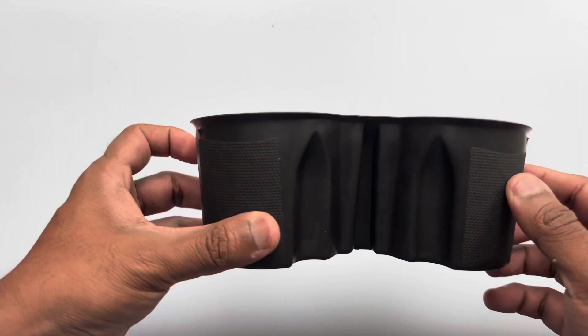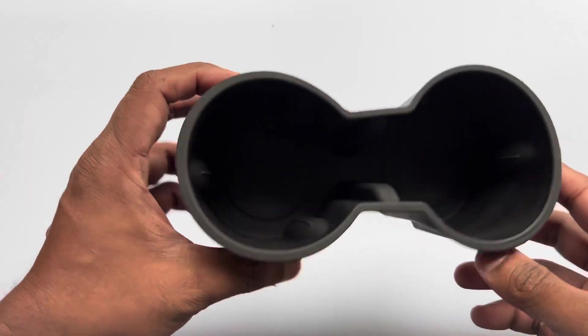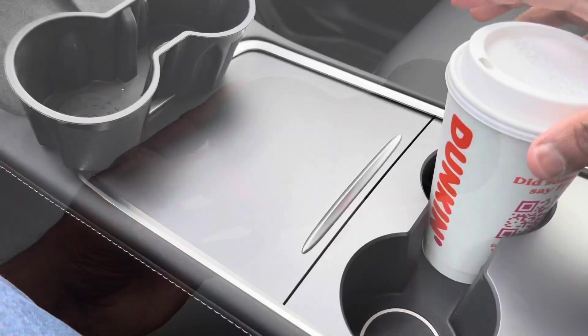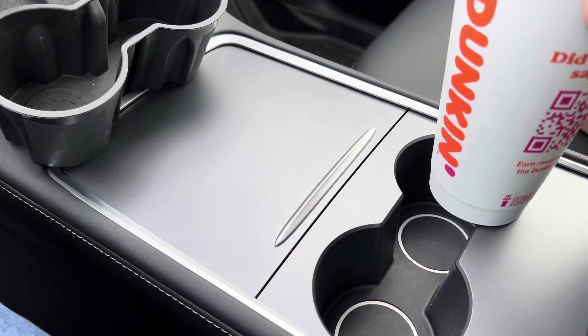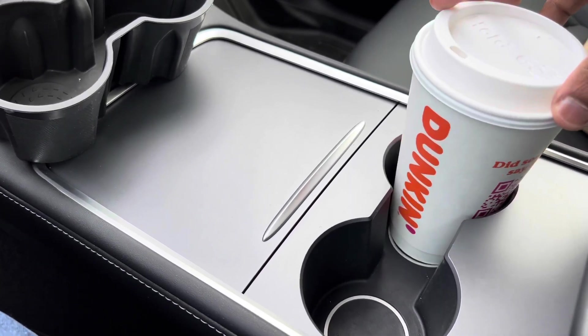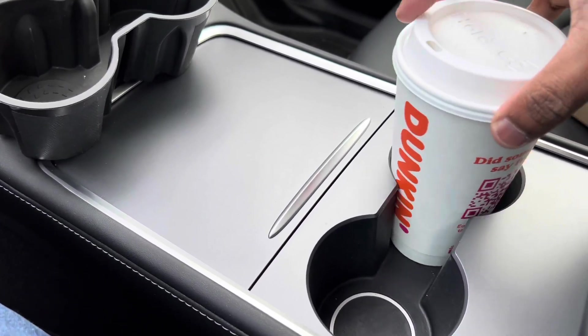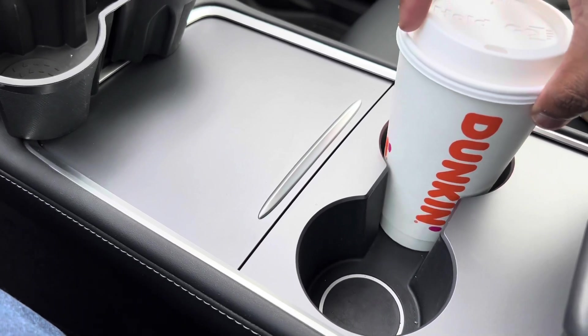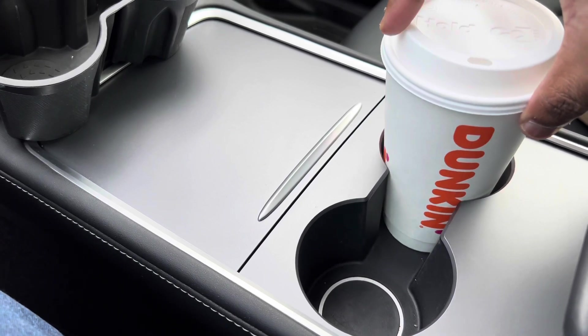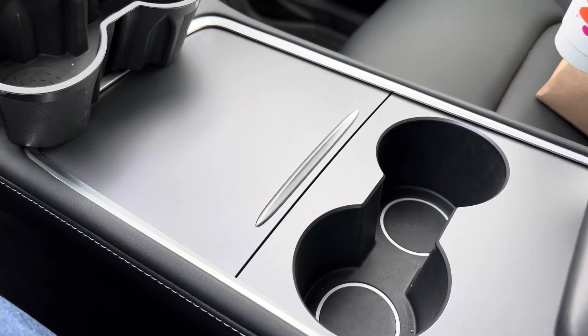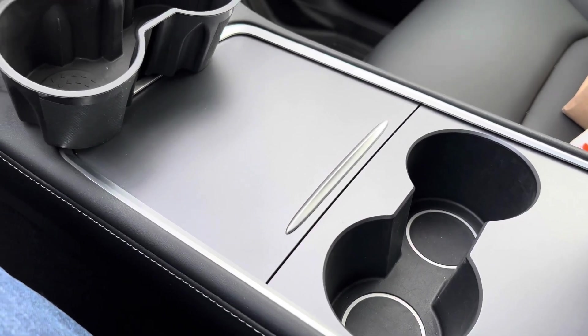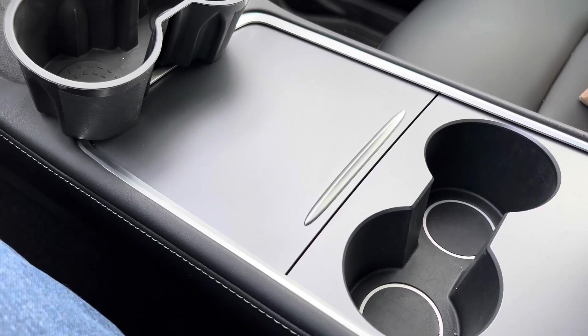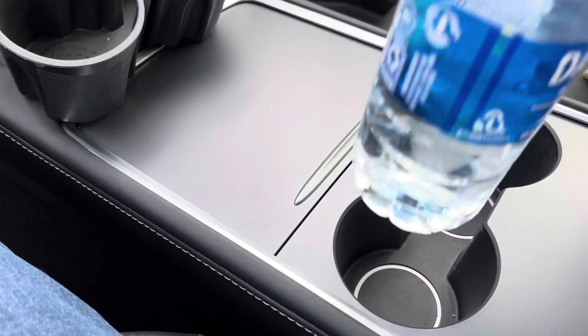So I'm in my car now. I just put this Dunkin Donut cup here - you can see it's pretty loose. If you're driving there's a chance that you could spill the coffee in the cup holder. Same thing with the water bottle.